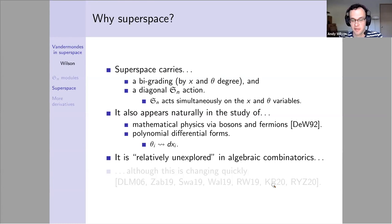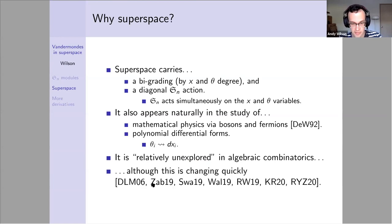Why should we work in this space? Well, there's a nice bi-grading. I can permute x and y degrees simultaneously, so there's a nice diagonal S_n action. It appears in the study of mathematical physics. You can think of x variables as bosons and theta variables as fermions, or as polynomial differential forms. Since there's an exterior algebra, it was relatively unexplored in algebraic combinatorics, though this is becoming less true. There's probably a dozen papers in the last year in this area.